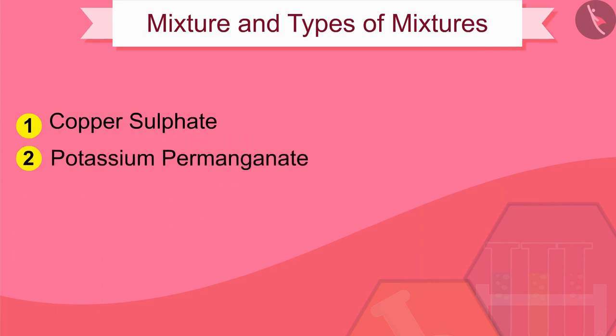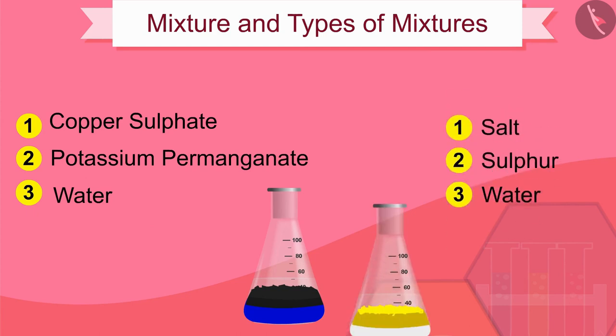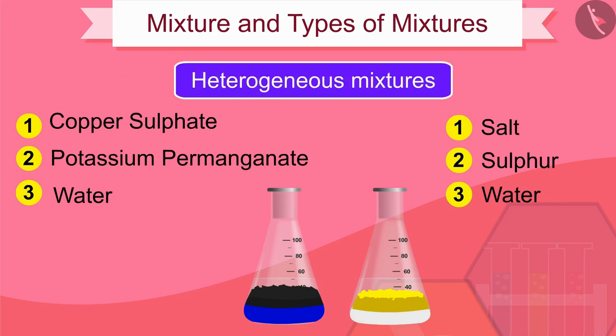Can you think of some more examples of heterogeneous mixtures? Copper sulfate and water, potassium permanganate and water, salt and sulfur and water — these are a few examples of heterogeneous mixtures.